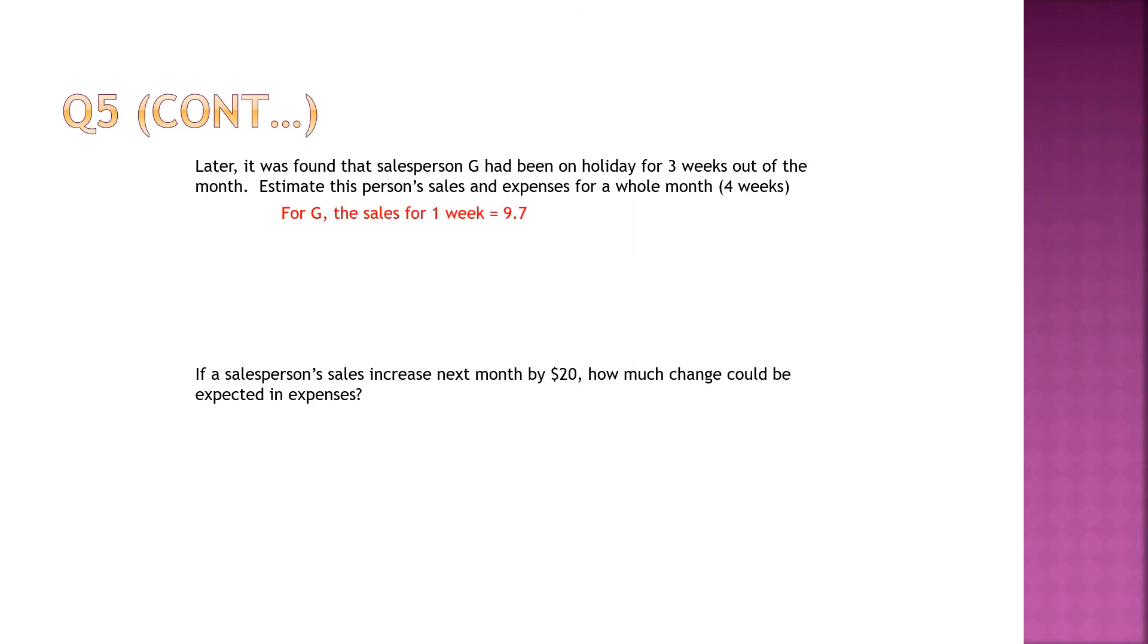Later it was found that salesperson G had been on a holiday for 3 weeks. Meaning 3 weeks she was on a holiday. Estimate this person sales and expenses for a whole month. So if one week is 9.7, 4 weeks you times 4, you get 38.8. So basically, in other words, it's 3,880. But when you put into the equation, you have to put it in as 38.8 because you must follow the format of the table. Then the projected expenses for the whole month is 26.81.